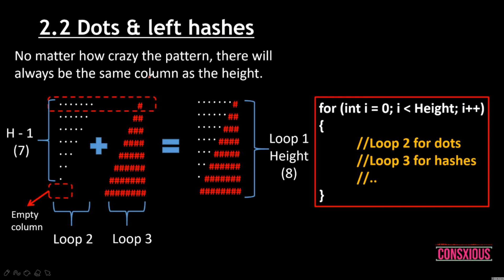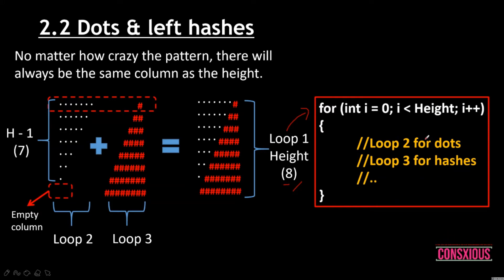The dots and left hatches section is similar to the Mario Less Comfortable problem. For example, with a height of 8, the column count always equals the height value: one, two, three, four, five, six, seven, eight. We break this into a parent loop, then loop two and loop three separately. Note that loop two has an empty column — h minus one equals seven, so there are only seven columns with one empty space.